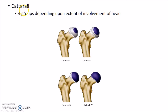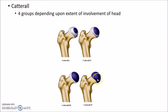Catterall classified Perthes disease into four groups depending upon the extent of involvement of the head of femur. These pictures show the four groups of Perthes disease, which depend on the extent of avascular necrosis of the head of femur.